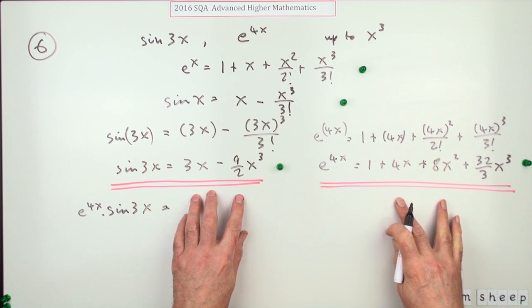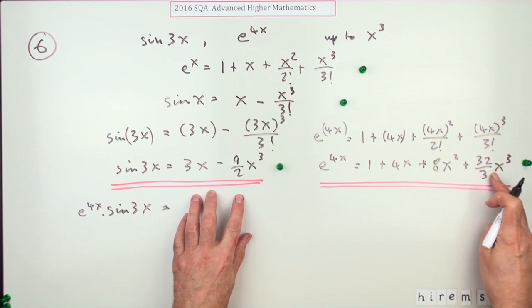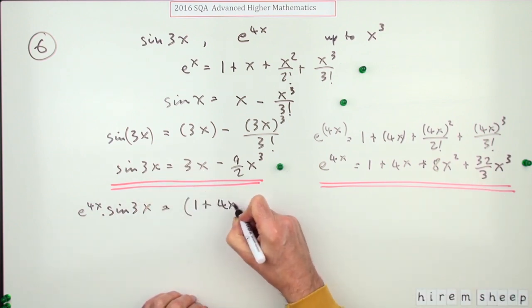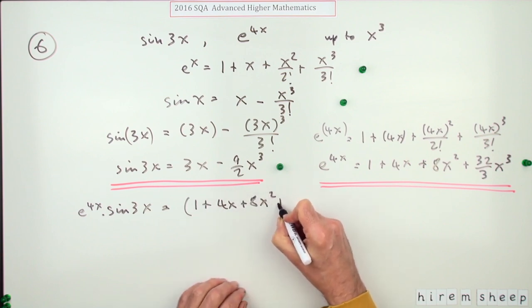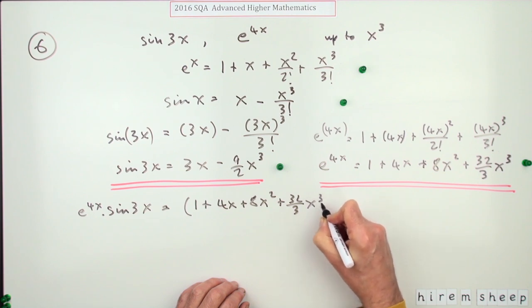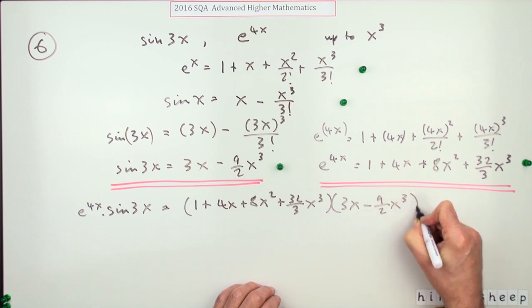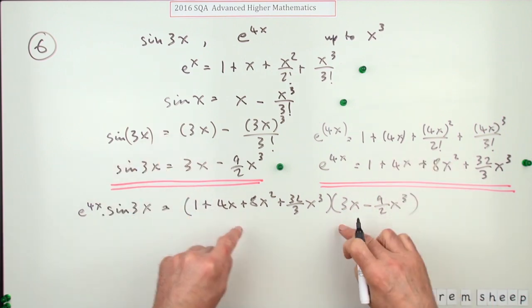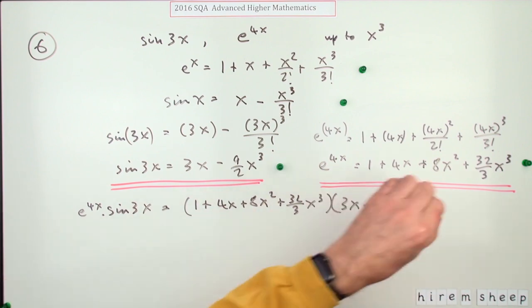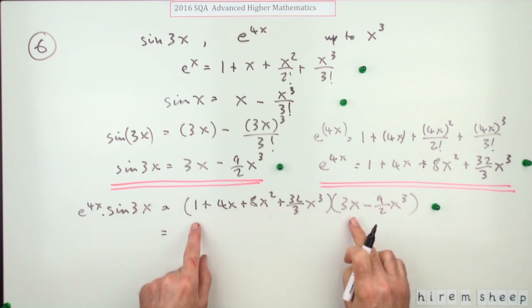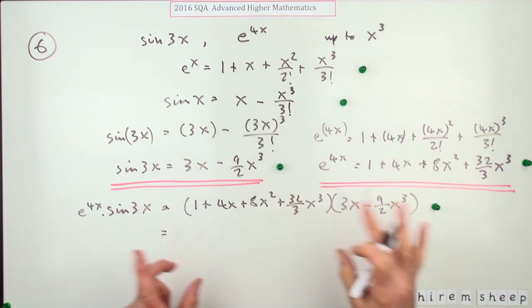So now for the final two marks. What's the product? E to the 4X times sine 3X. One thing though, if you're multiplying those, there's no point using any products that will give you a power greater than 3. So straight away, this part here is going to be no use to you. This term's actually useless to you, but I'll put it down.